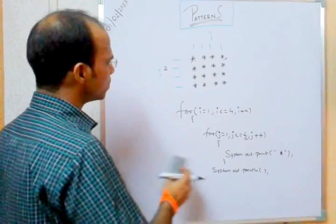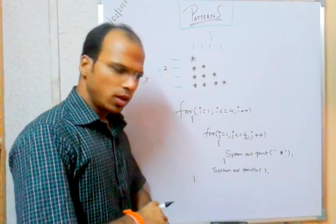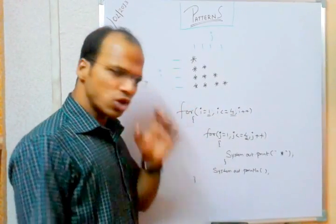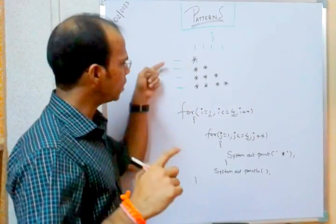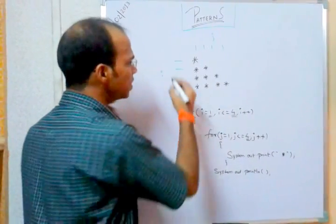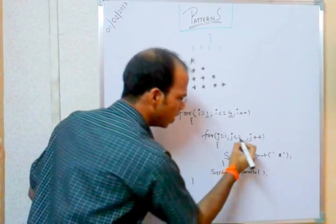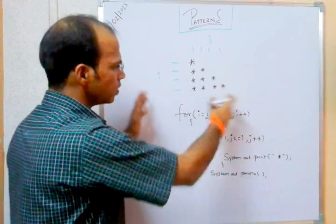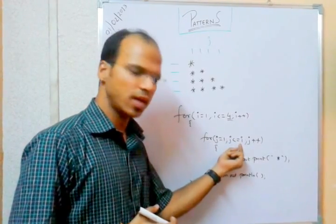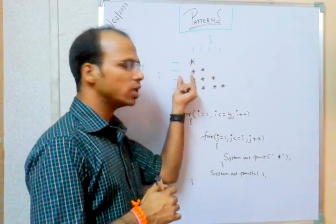Now let's change the question and make a new pattern — a triangle. This time I have four rows, so I still goes from 1 to 4. But when row number is 1, print 1 star; row 2, print 2 stars; row 3, print 3 stars; row 4, print 4 stars. The number of columns depends on the row number. So if I write J less than or equal to I in the inner loop, it prints a triangle pattern.